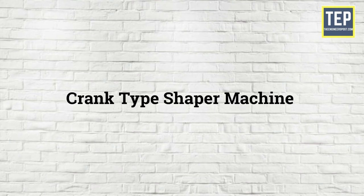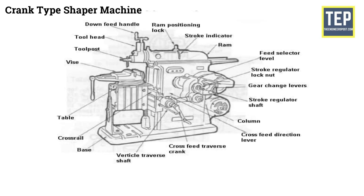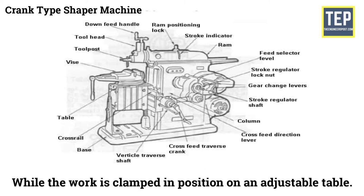Crank type Shaper Machine: These are very common types of Shaper Machines, which is using to hold the work piece on the table. The tool is reciprocating in motion equal to the length of the stroke desired while the work is clamped in position on an adjustable table.